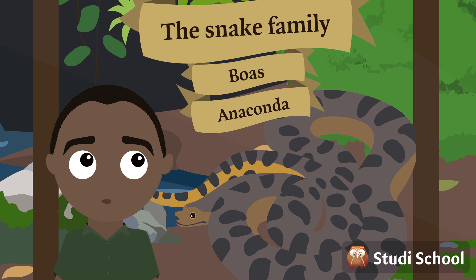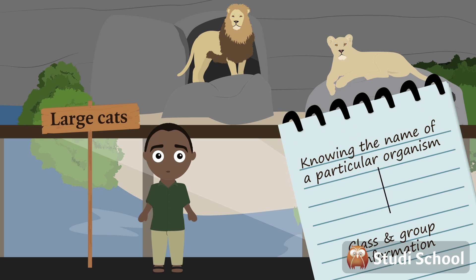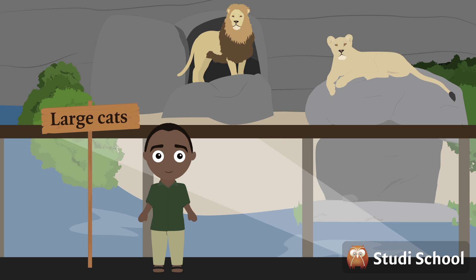Shall we do an example of sharks? Classification is an important part of biology, because knowing the name of a particular organism gives you immediate access to all the known information about that particular class or group. The scientific names used for classification help us understand the behaviour and attributes of different organisms.